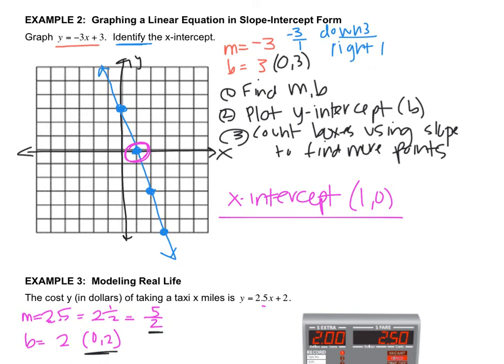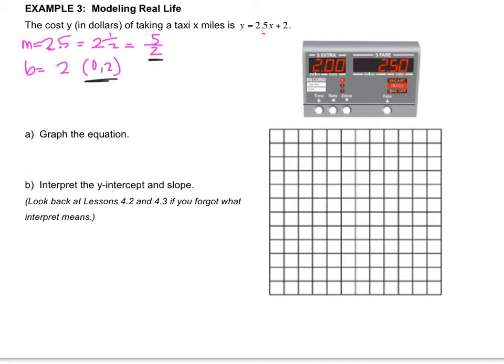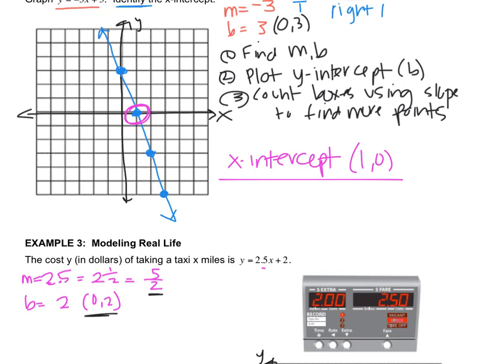Step 2 is to plot the y-intercept. Let me make my grid first and I'm only going to make it first quadrant because we can't be negative. You can't have negative dollars and you can't have negative time. I'm going to put a dot at 0, 2 on the y-axis because that's what step 2 says to do. Now we go up to step 3.